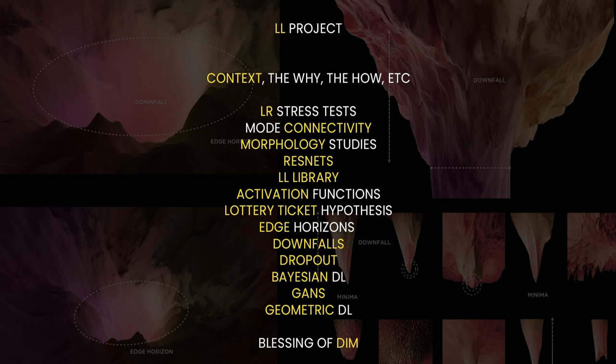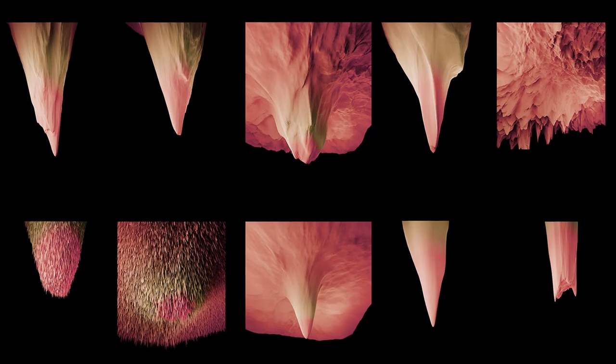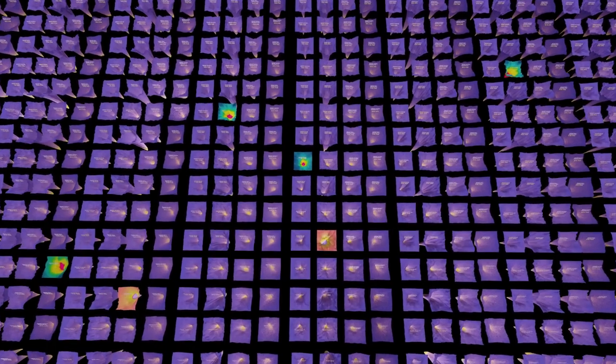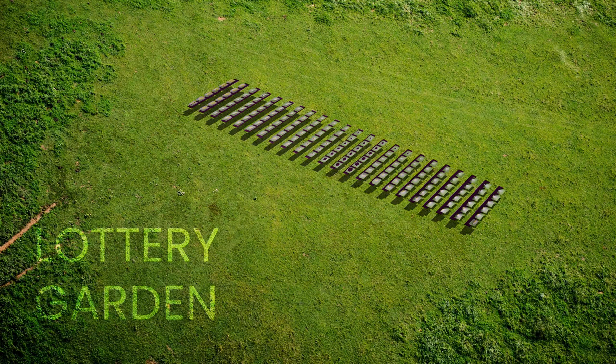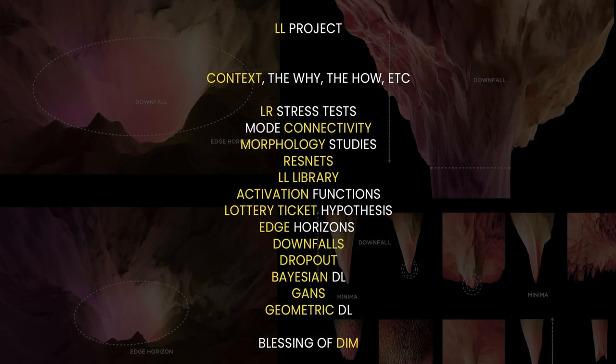I invite you today to do this journey with me. This presentation is structured in two parts. In the first part, I want to give you the context — the why and the how of these visualizations — because this is very important before jumping onto a series of pieces covering many different topics: from learning rate stress tests, mode connectivity, morphology studies, resnets, the library project, activation functions, the lottery ticket hypothesis, edge horizons, downfalls, dropout, Bayesian deep learning, GANs, and geometric deep learning. And I will end up blessing all of you with the blessings of dimensionality.